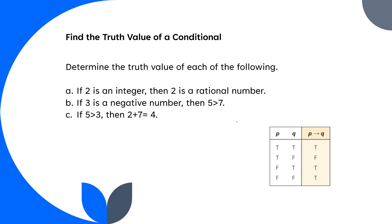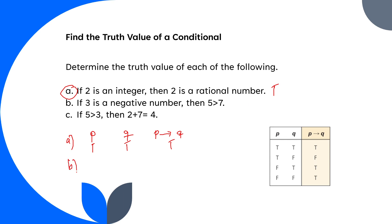Find the truth value of each of the following conditional statements. Letter a: 'if two is an integer then two is a rational number.' Two is an integer — true. Two is a rational number — true. Since p is true and q is true, the truth value of p implies q is true.